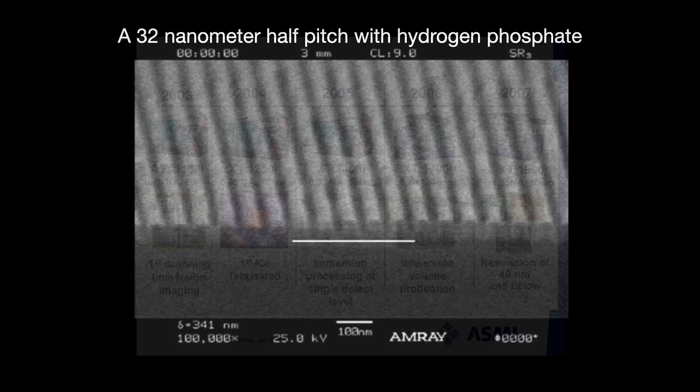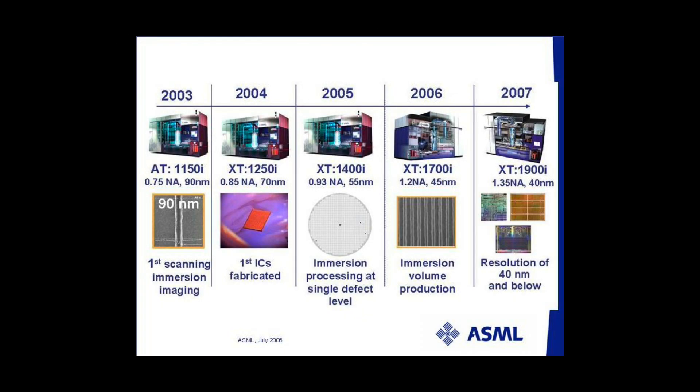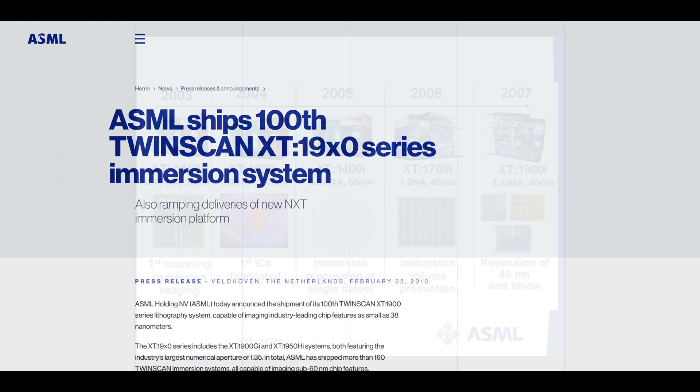ASML handily won this race, gaining the market share dominance that they are today known for. The leading 193 nanometer immersion systems are ASML's now mature XT-1900 series, introduced over a decade ago. In 2010, ASML sold their 100th such immersion DUV tool. An amazing achievement.